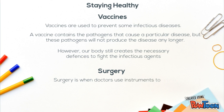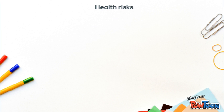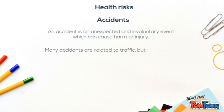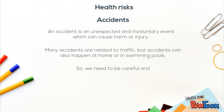And surgery is when doctors use instruments to repair something inside the body. Health risks: accidents. An accident is an unexpected and involuntary event which can cause harm or injury. Many accidents are related to traffic, but accidents can also happen at home or in a swimming pool. So we need to be careful and prevent accidents.